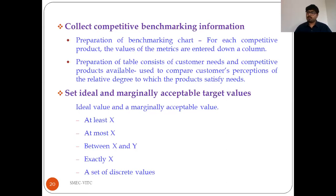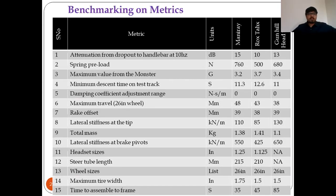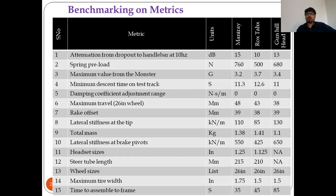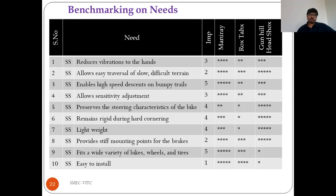You need to fix two target values: a marginal value and an ideal value. The template could be 'at least this much,' 'at most this much,' 'between this and this,' 'exactly this,' or 'from this list.' In the benchmarking chart for the suspension system, all 15 metrics are listed with their units, and three competitors — Manny Ray, Rock Shox, and Gun Hill headstocks — are studied against each metric with their actual values.